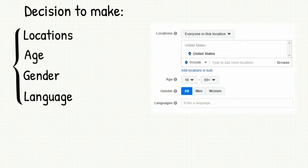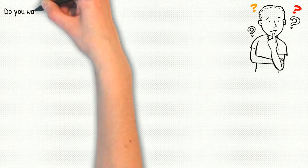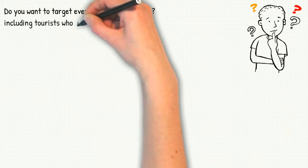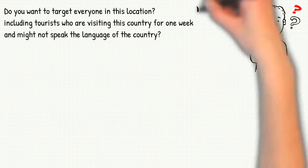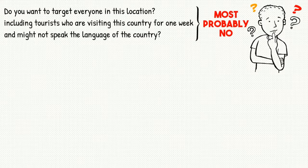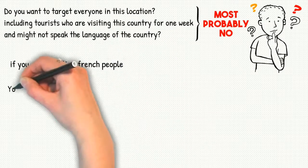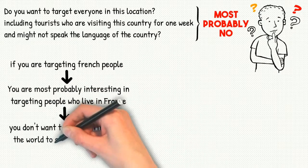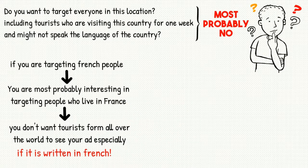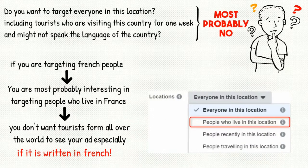After choosing the country you want to market your product in, we have four important options. To know how to deal with them you have to ask and answer the following questions. You have chosen your location, but do you want to target everyone in this location, including tourists who are visiting this country for one week and might not speak the language? Most probably no. If you are targeting French people you are most probably interested in targeting people who live in France. You don't want tourists from all over the world to see your ads, especially if it's written in French, so in this case you choose people who live in France.